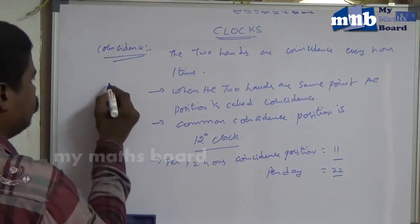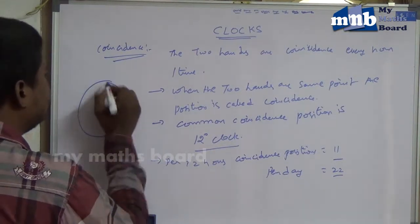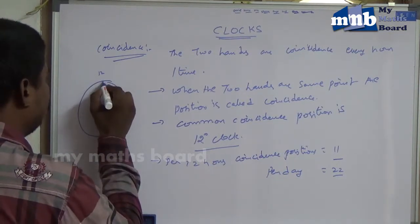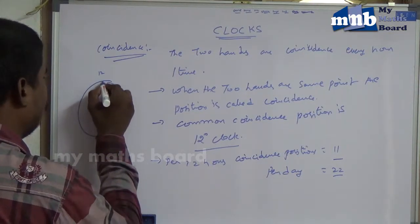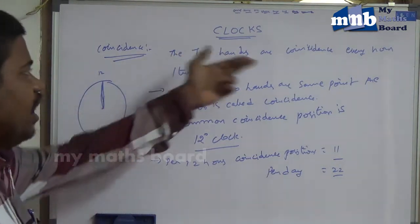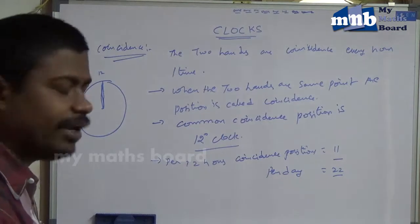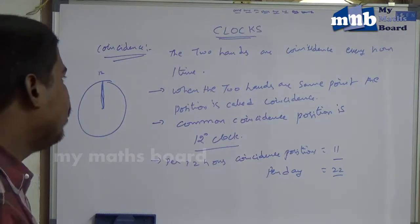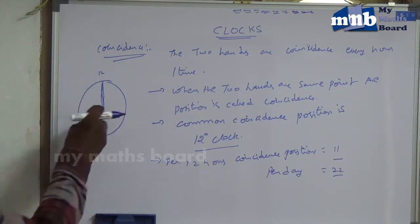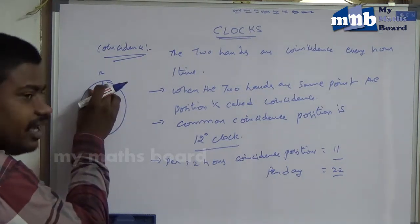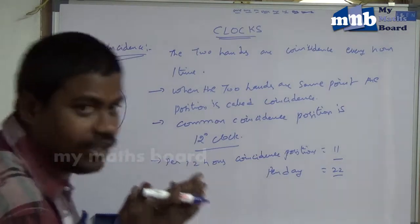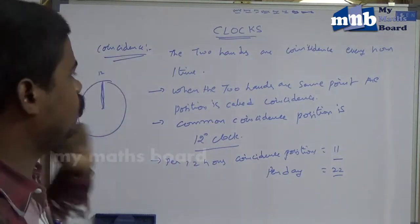Next we will discuss the Coincidence Position. Coincidence Position means the exact time will be 12 o'clock. When the two hands are in the same point — they are mixing, they are clubbing — that position is called Coincidence. That is called Coincidence Position.